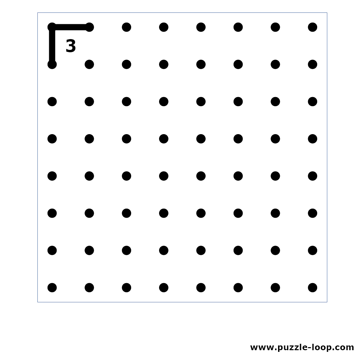3 in a corner results in this. Again we can focus on the corner dot. If there are no lines connected to it, then the 3 cannot be solved. So the dot has 2 lines connected to it.